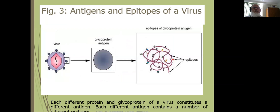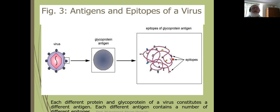Antigens and epitopes of a virus: the virus structure — capsid, nuclear protein, glycoprotein, any protein — all the protein components can act as antigens.